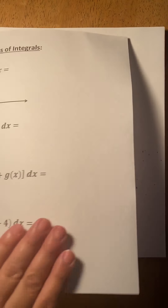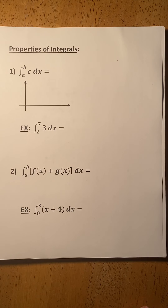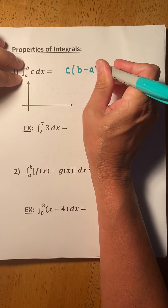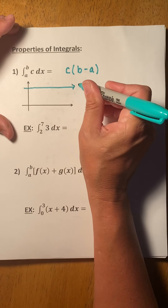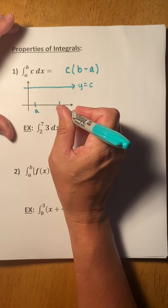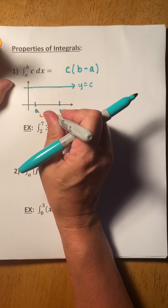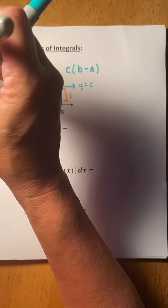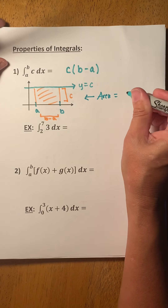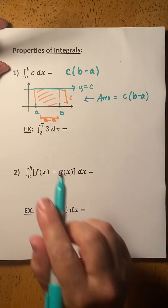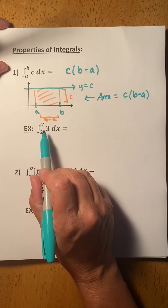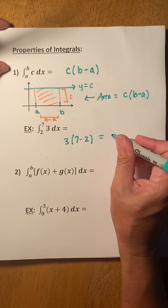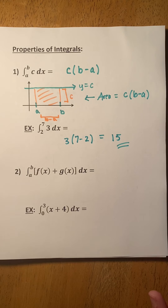Let's talk about some properties of integrals. Anytime we integrate a constant, the integral of a constant is just the constant times the difference in the endpoints. That makes sense because y equals c is a horizontal line from a to b, making a rectangle whose width is b minus a and height is c. For example, the integral from 2 to 7 of 3 dx is just 3 times (7 minus 2), which is 3 times 5, which is 15.